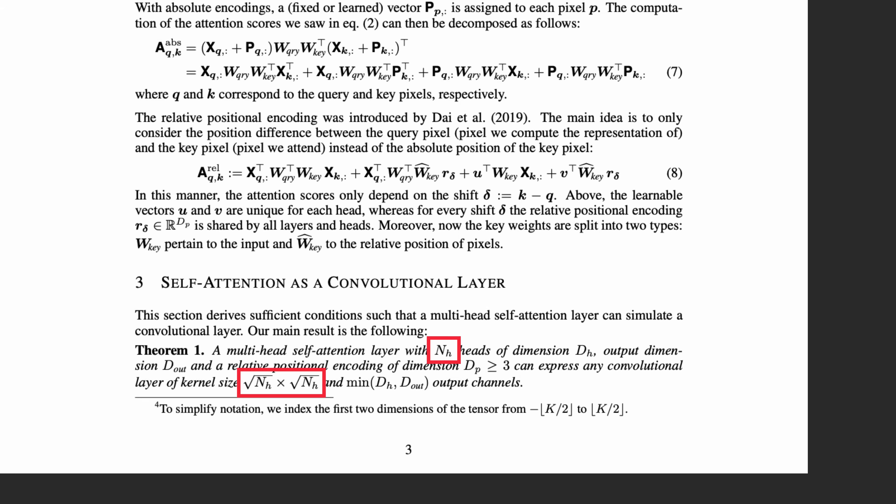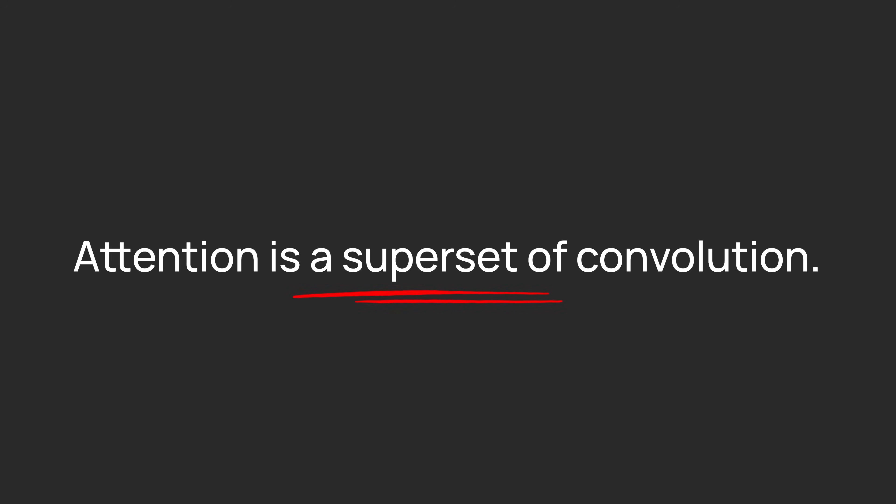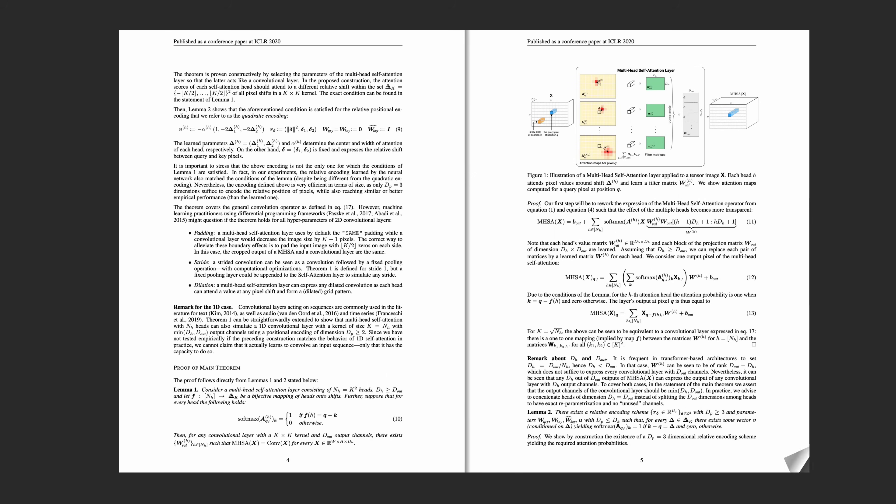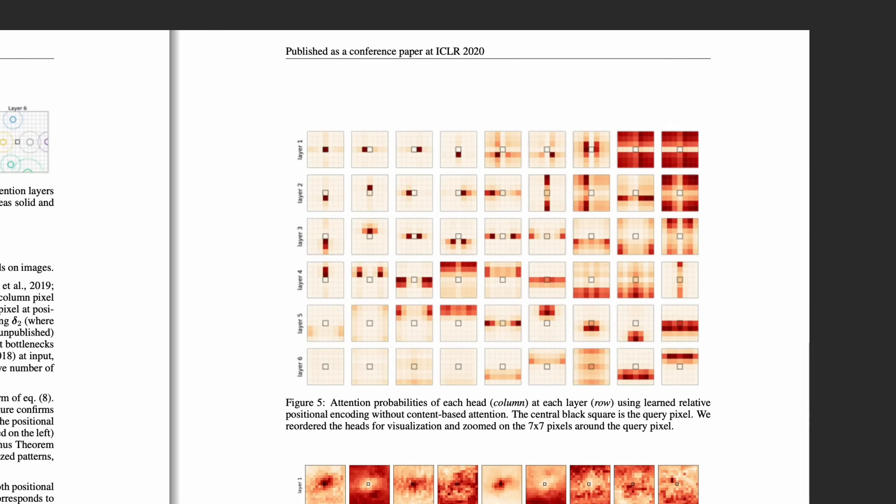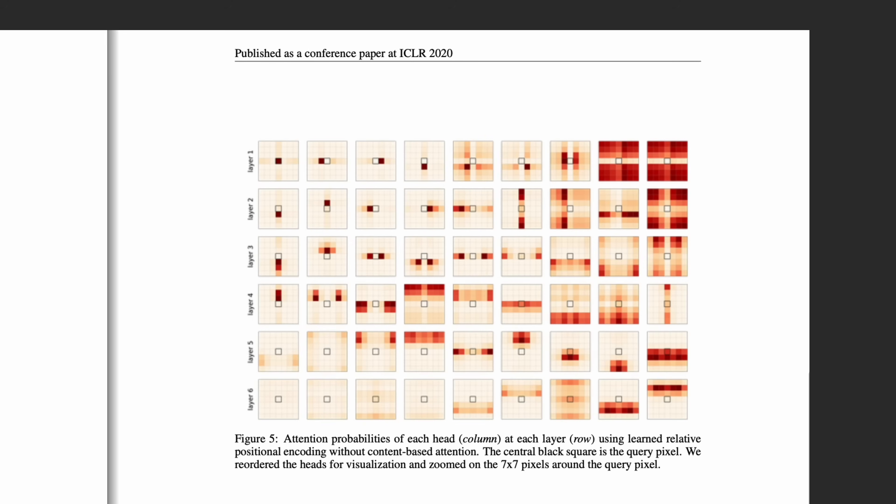And that's what the theorem claims. Its implication is that self-attention is not just less biased than convolution, it's a strict superset. It can implement convolution and much more. And this behavior isn't just theoretical. Here's a trained digit recognition model with six layers and nine heads each. Look at layer one. The query pixel is in the center, and these orange-red pixels are the positions each head attends to. At least four of the heads show sharp, localized patterns that closely mimic a convolutional kernel.